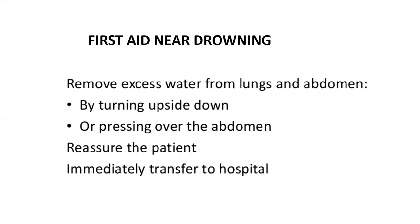For adults, put the patient at the left lateral position and press the abdomen. If in the prone position, press from the back. Usually you put at the lateral position so you can see the water coming out from the mouth, and then press the abdomen. For infants and children, turning upside down is possible. After that press the abdomen to remove the water from the lung. After reassessing the patient, transport immediately to the hospital.